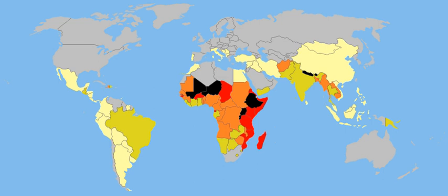The child labour problem is not unique to India. Worldwide, about 217 million children work, many full-time, as per the Child Labour Prohibition and Regulation Act, 1986, amended in 2016.